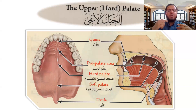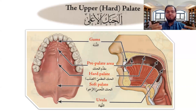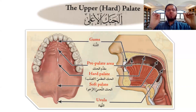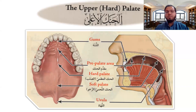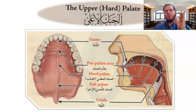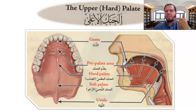The parts of the upper palate — how to understand this? We will use it when saying different letters like al-jim, al-shin, al-ya, al-qaf, and al-kaaf. This is important to understand: the upper palate, the gums, pre-palate, hard palate, and soft palate. For example, al-qaf — is it with the soft palate or hard palate? This is an important question. We must memorize these parts to know exactly what the pronunciation and articulation point is for many letters. As-salamu alaykum wa rahmatullahi wa barakatuh.